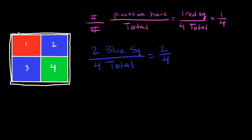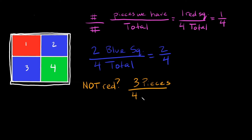What fraction of the whole square is not red? We have two blue pieces and one green one — so three pieces that are not red, over four total pieces. That gives us three over four, or three-fourths.